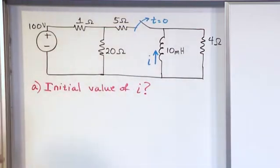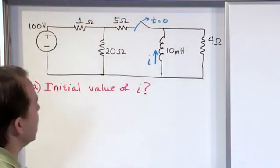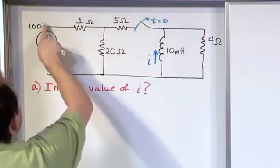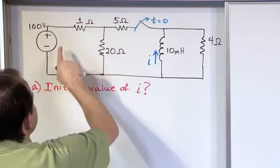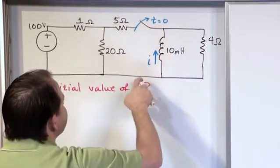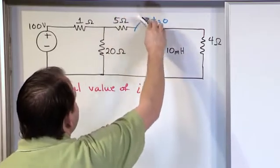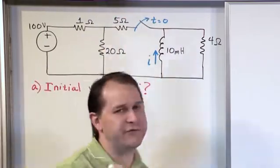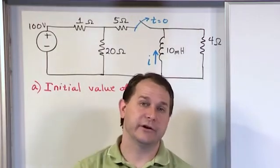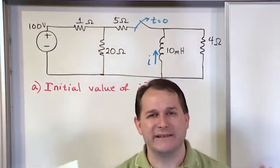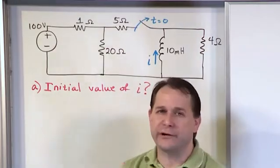One thing I want to point out about your thought process: whenever the switch is closed, the current comes out, some circulates here, but it continues through the 5 ohm and goes through this inductor. So in this leg, the current is coming around this way, which is contrary to how we've drawn the current in the circuit. What I've drawn in blue is how the problem is given to you. You can't change the direction of i.